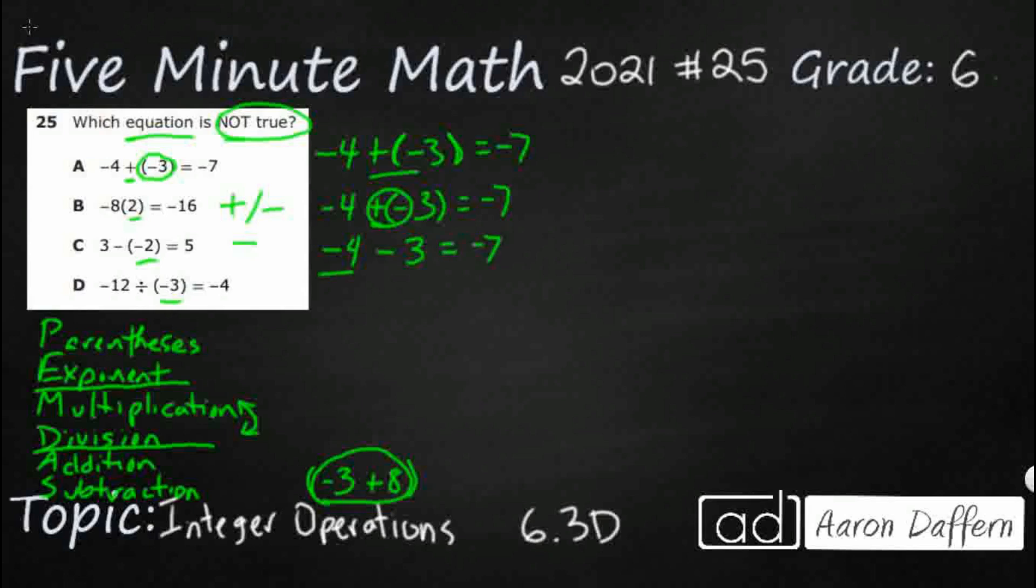And when you have two negatives, when you have a negative and you're going to minus something else, that kind of acts just like addition. So negative 4 minus 3 is going to be negative 7. And that one works, which means we don't need it.